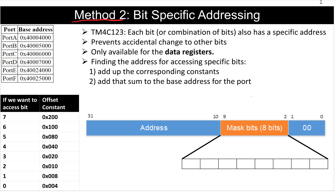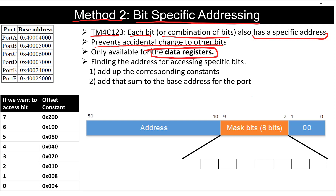The second method, which is more efficient, is bit-specific addressing. Our microcontroller allows us to access one bit or a combination of bits using a specific address. This way we prevent accidental change of other bits we do not need. However, this property is only available for the data registers. To find the specific address for the bits we want to access, there are two steps: first, add up the corresponding constants.